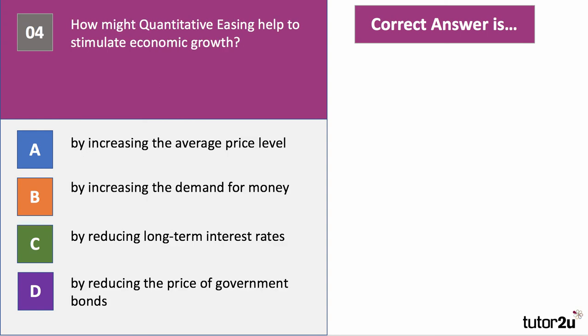Question four: how might quantitative easing — QE — help to stimulate economic growth? Have a go at this question. QE is a form of unconventional monetary policy designed to stimulate demand and perhaps prevent deflation. What's the main way through which it works?